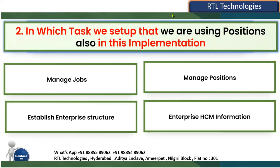In HCM implementations we have jobs and positions. Jobs are mandatory — we must implement jobs. But positions are optional; it's up to the client whether they want to use positions or not. Where do we mention that we are going to use positions in this implementation? The options are: Manage Jobs, Manage Positions, Establish Enterprise Structure, or Enterprise HCM Information.